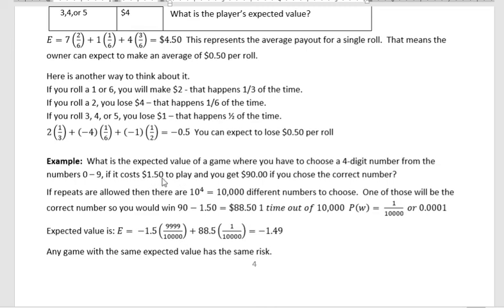The expected value here is −$1.49. You're not going to win very often — most of the time you lose. Any game with an expected value of −$1.49 would be equally risky to play, regardless of its structure. It could be a three-digit number chosen from seven digits or a nine-digit number — if the expected value is −$1.49, the risk is the same. We'll do another expected value example in the next video. Have a great day!